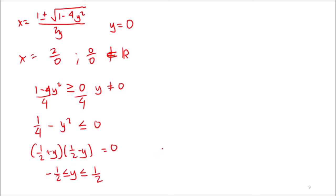Additionally, y must not equal zero, to avoid an indeterminate form in the denominator 2y. So the range is y ∈ [-½, ½] where y ≠ 0.